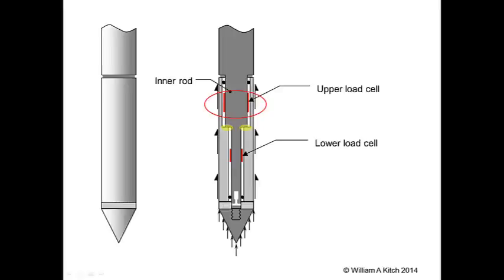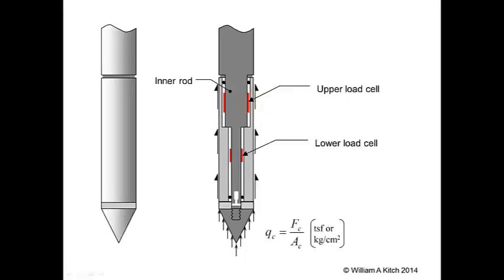By simultaneously reading both the upper and lower load cells, it is possible to separate the end bearing load, measured by both load cells, from the side friction force, which is measured only by the upper load cell. The end bearing is reported as a stress called the cone resistance or tip resistance. The symbol Qc is used to represent the tip resistance, and it is equal to the measured end bearing load Fc divided by the cross-sectional area of the cone Ac. Qc is normally reported in units of tons per square foot or kilograms per square centimeter.